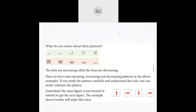Now, what do you notice about these patterns? In the first one you have only one dot, then two dots, then three, then four, then five - it is increasing by one. Now if you look at these lines: in the first pattern you have five lines, then four, then three, then two, then one. So the dots are increasing while the lines are decreasing.